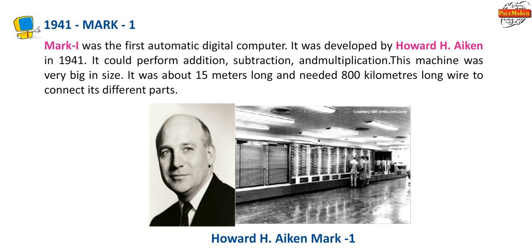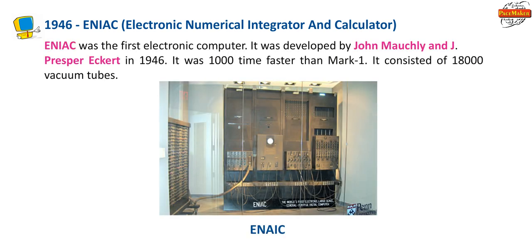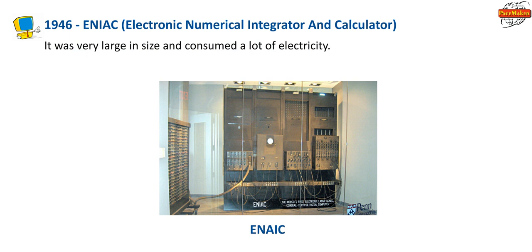It was about 15 meters long and needed 800 kilometers of wire to connect its different parts. 1946 — ENIAC (Electronic Numerical Integrator and Calculator): ENIAC was the first electronic computer. It was developed by John Mauchly and J. Presper Eckert in 1946. It was 1000 times faster than Mark I, consisted of 18,000 vacuum tubes, was very large in size, and consumed a lot of electricity.